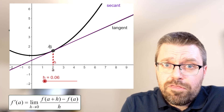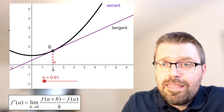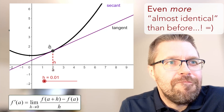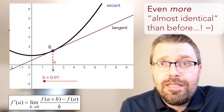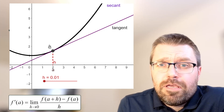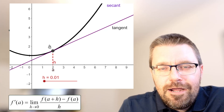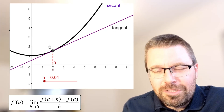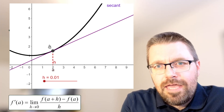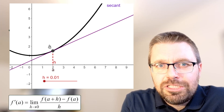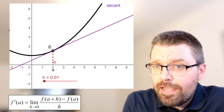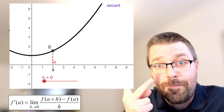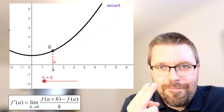If h is closer yet to zero, like 0.01, they are almost identical. If we only look at the tangent and then only look at the secant, we can't really see any difference. If we zoom in, then maybe we can see that they are not exactly the same line. But if we change the value of h to exactly zero, then the secant will go away, because these two points are no longer two points — it's the same point.